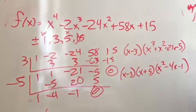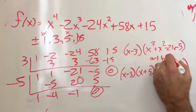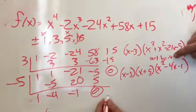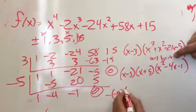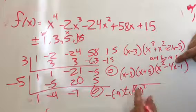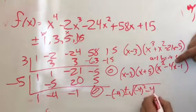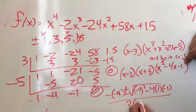So, I have a is 1, b is negative 4, c is negative 1. So, the quadratic formula is negative b, plus or minus the square root of b squared. Notice I put that in parentheses, so I'm squaring the negative as well. Minus 4 times a times c all over 2 times a.